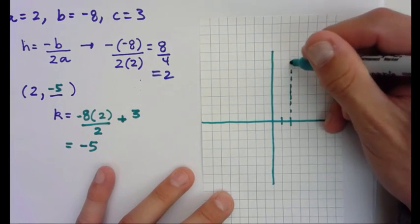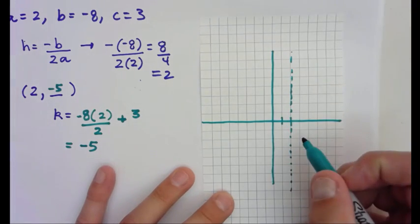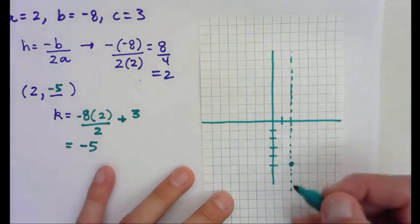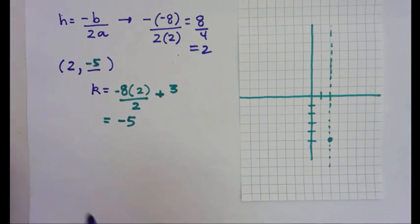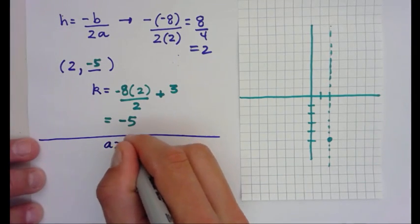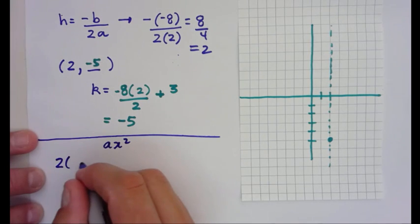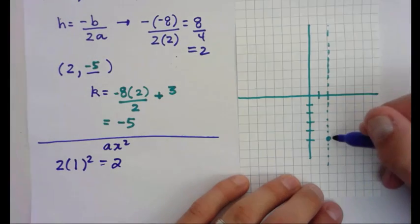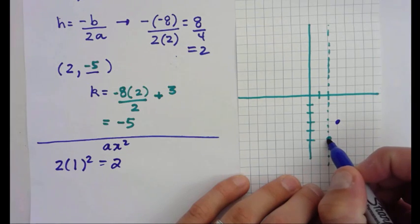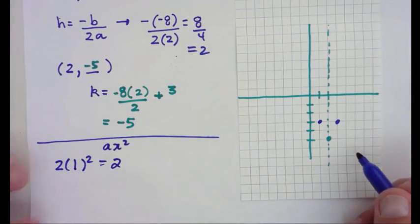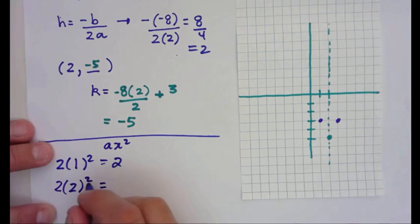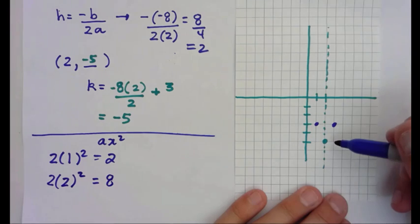The vertex and axis of symmetry is at (2, negative 5). The axis of symmetry is the middle — it divides the parabola equally on both sides. The parabola opens up. Now we need extra points using ax squared, which is 2x squared. If we go 1 unit away, 1 squared times 2 is 2, so we go 1 space over and 2 up. If we go 2 spaces over, 2 squared is 4 times 2 is 8, so we go up 8.